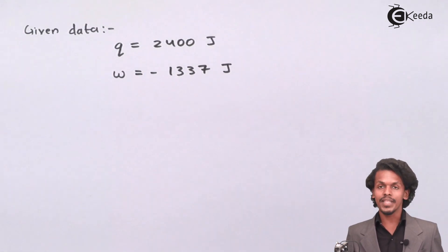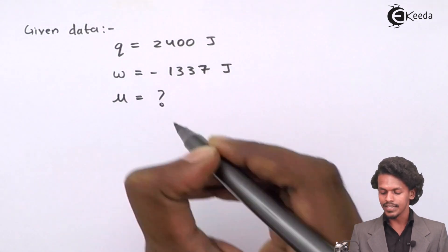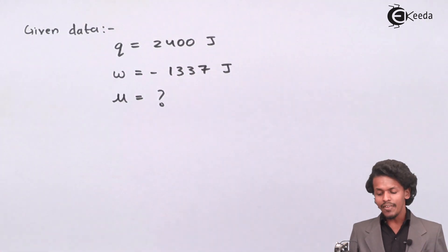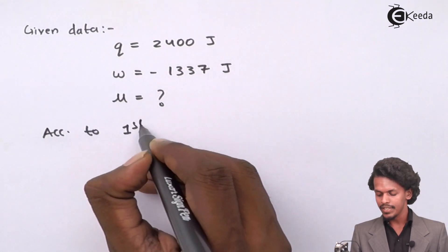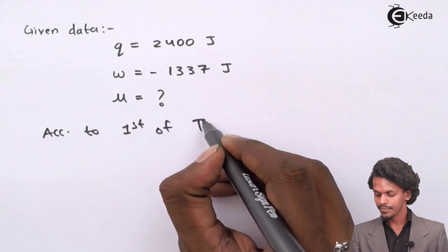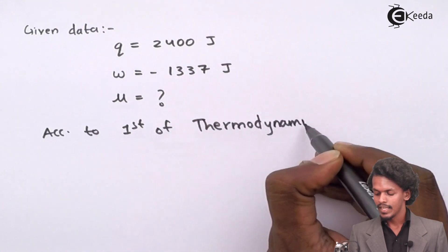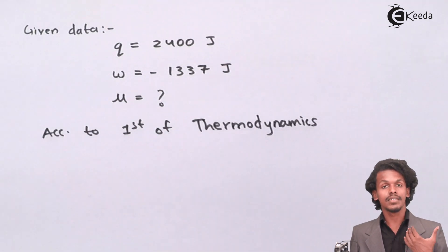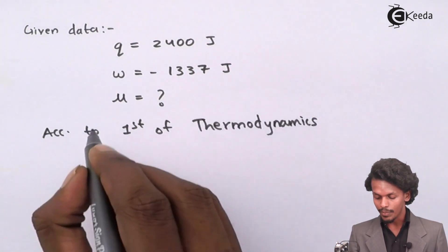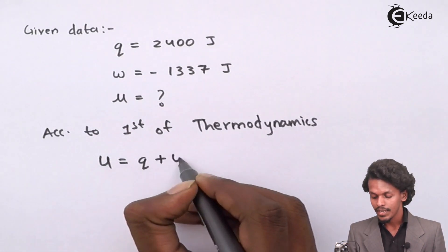On that basis, we have to calculate the internal energy. The internal energy is denoted by U. According to the first law of thermodynamics, the internal energy is made up of heat and work done by the system. So internal energy U equals Q plus W.